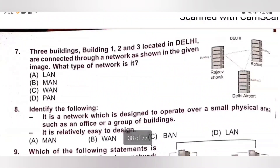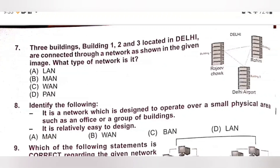Seventh one. Three buildings — building 1, 2 and 3 — located in Delhi are connected through a network as shown in the given image. What type of network is it? Options: A. LAN, B. MAN, C. WAN, D. PAN. MAN is used to combine network groups located in different buildings into a single network. It includes several buildings or even an entire city. MAN is larger than LAN but smaller than WAN. Option B, MAN, is the correct answer.